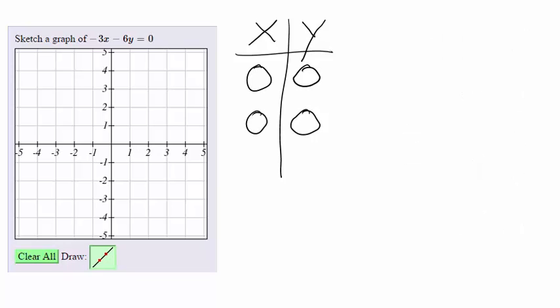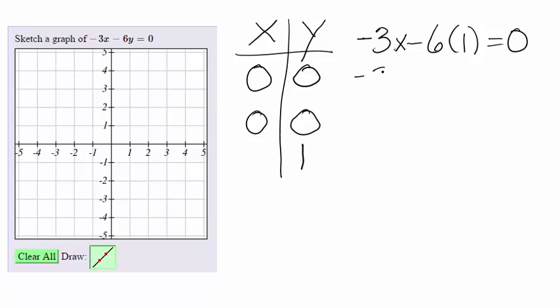Now notice we only have one point, the point (0, 0). So we need to pick another value for x or for y. Let's pick 1 for y. The reason I did not put 1 in for x is because I want to avoid fractions. So putting 1 in for y, we have negative 3x minus 6 times 1 equals 0, which would be negative 3x.